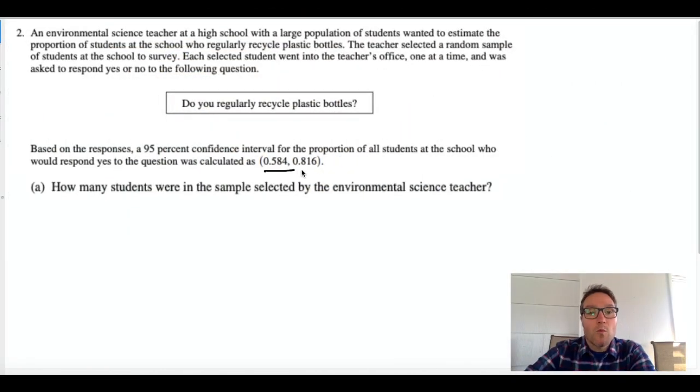Okay, so in this problem we're given a confidence interval. That's the reverse of how it usually works. Usually they want us to compute or calculate a confidence interval, but here they give it to us and it's a 95% confidence interval for a proportion.